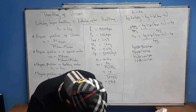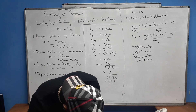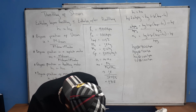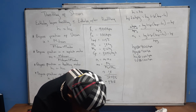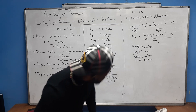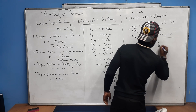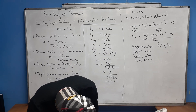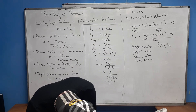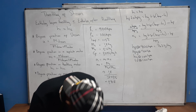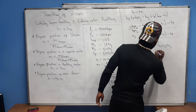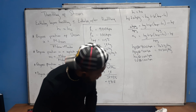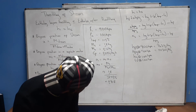From the steam table at 900 kPa: hf = 743 kJ/kg and hfg = 2030 kJ/kg.